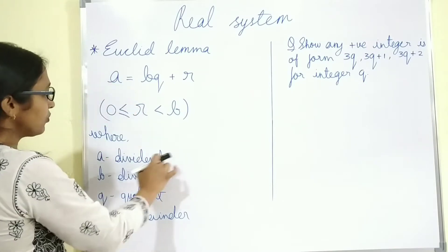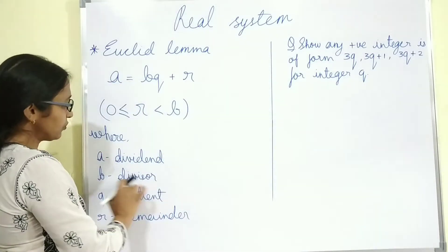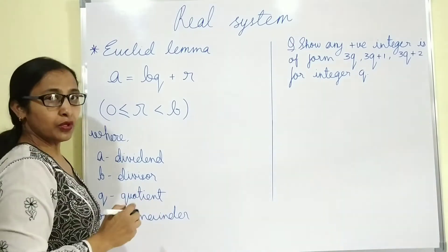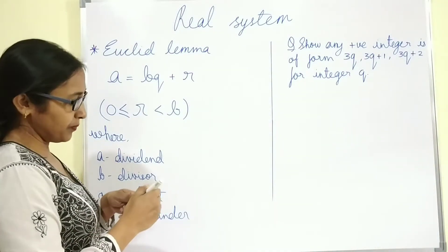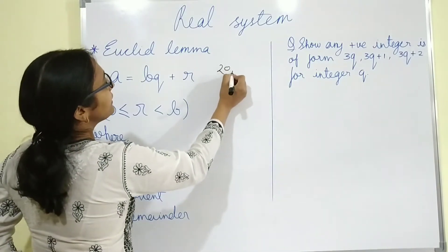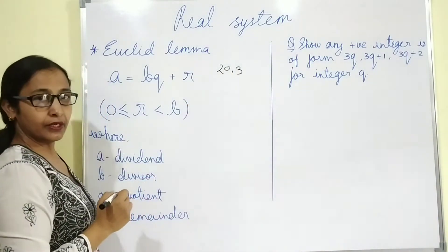Where A equals to dividend, B equals to divisor, Q equals to quotient and R equals to remainder. I am taking a pair of two integers that is 20 and 3.